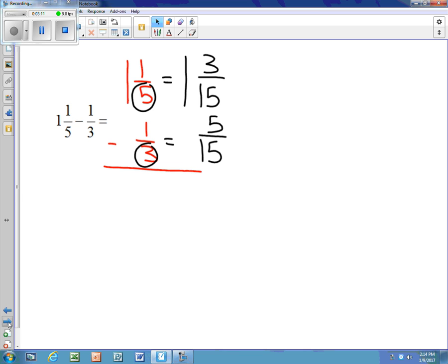I see from here right away that I cannot subtract 3/15 minus 5/15, so I have to borrow, and that becomes a 0. 1 whole is 15/15, so I have to add 15 to my numerator, and this becomes an 18. So 18/15 minus 5/15 is 13/15.